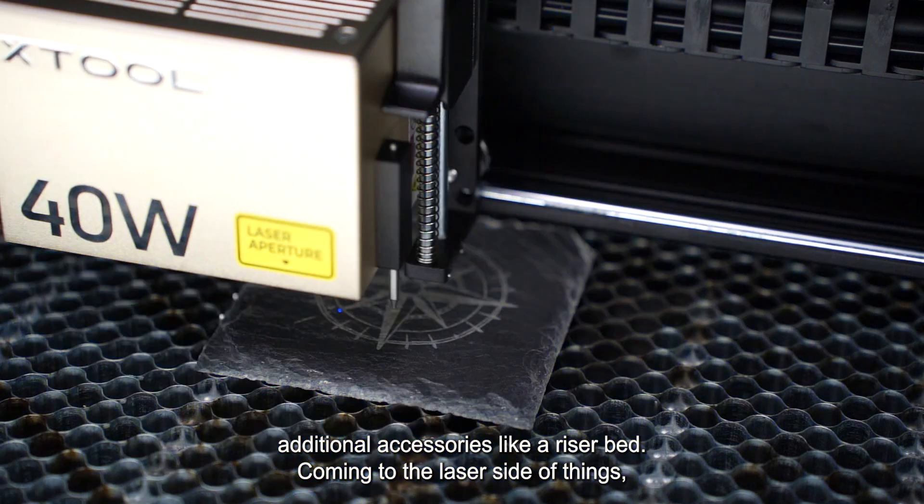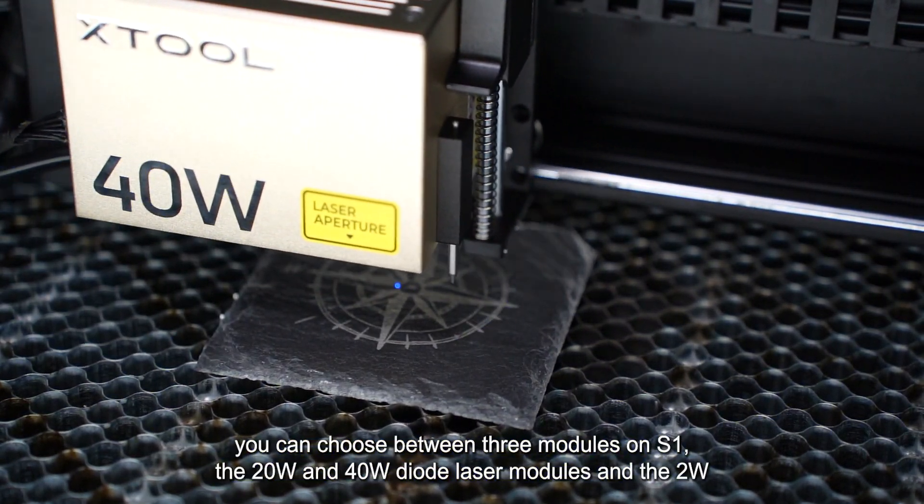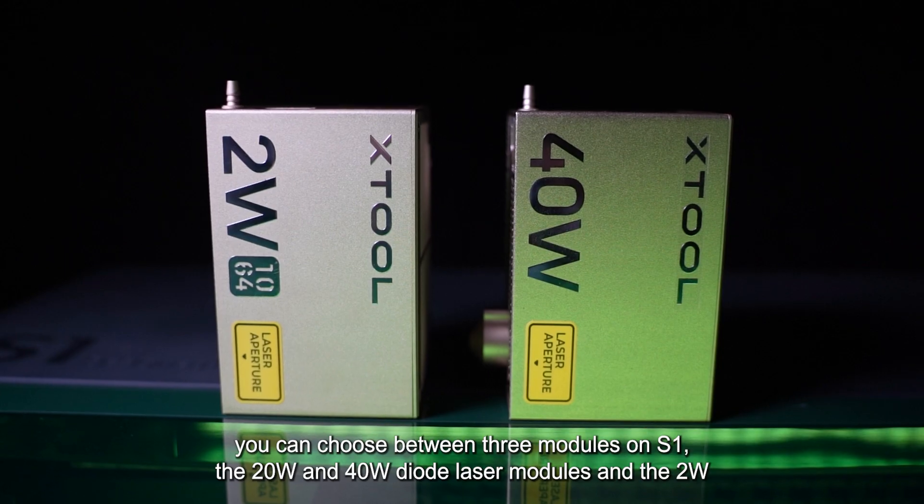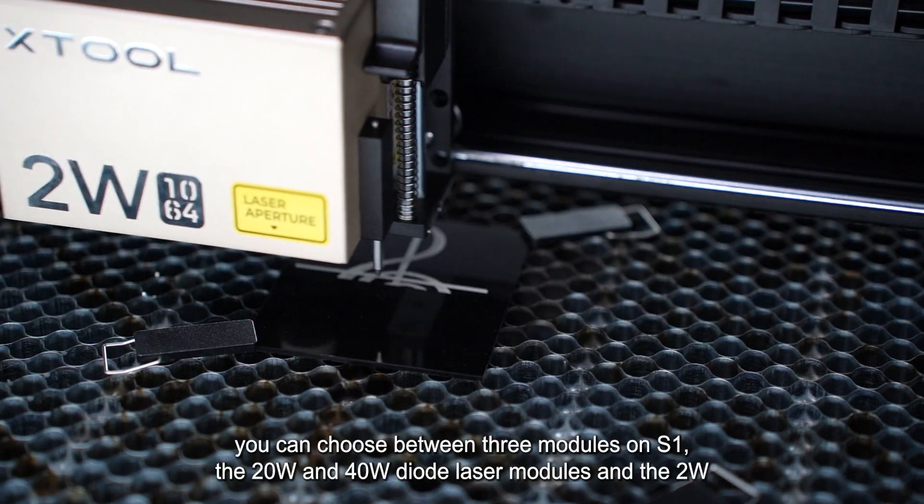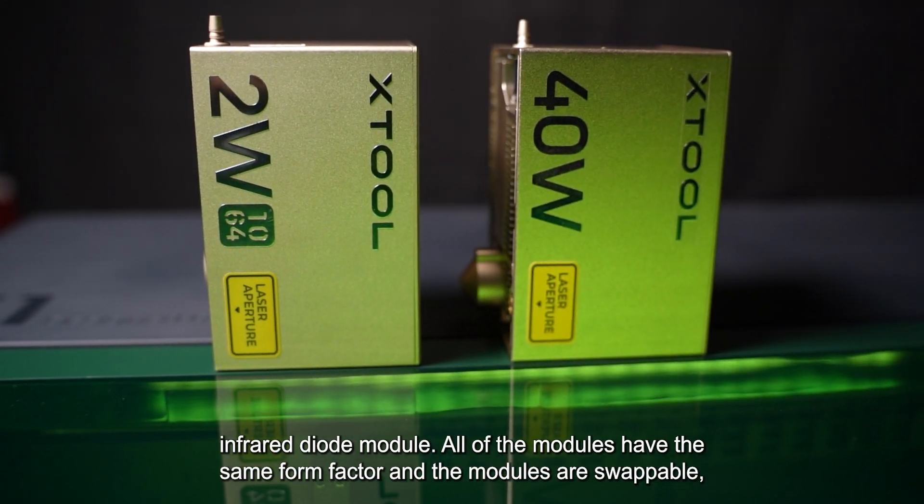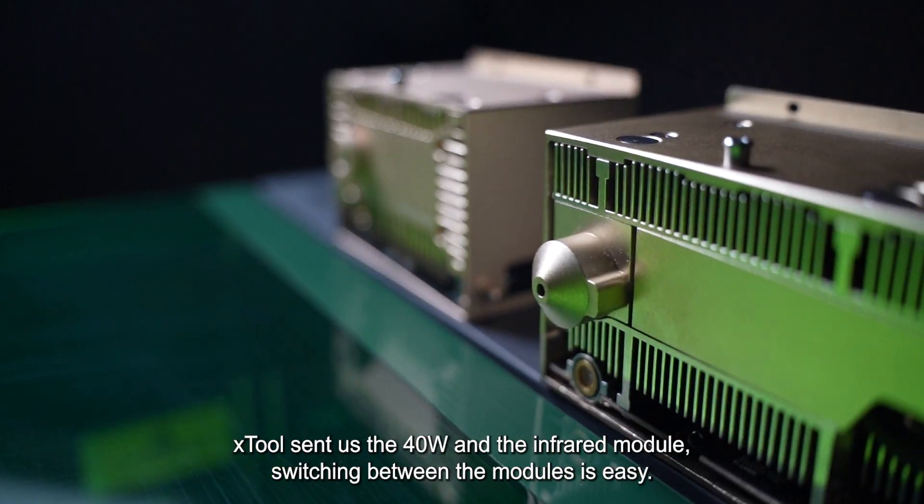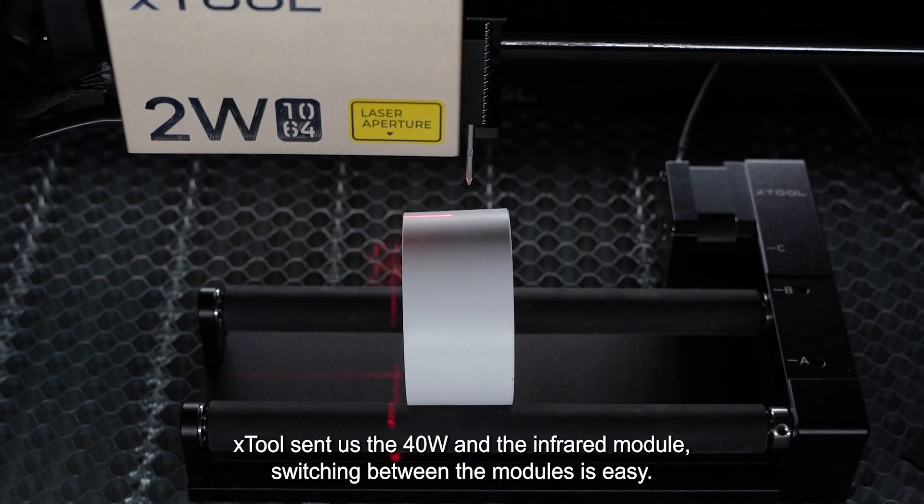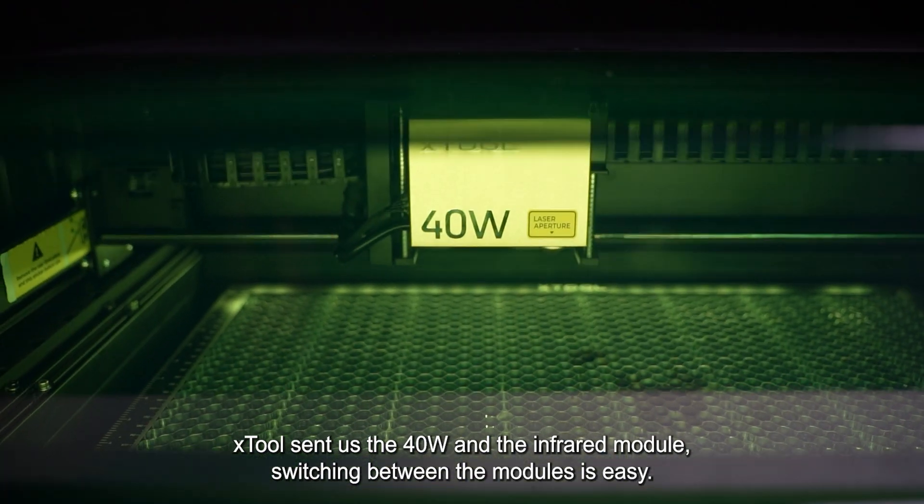Coming to the laser side of things, you can choose between three modules on S1. The 20 watt and 40 watt diode laser modules and the 2 watt infrared diode module. All of the modules have the same form factor and the modules are swappable. XTool sent us the 40 watt and the infrared module. Switching between the modules is easy.